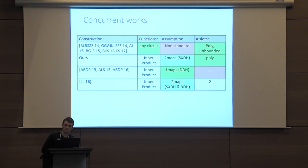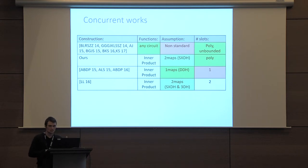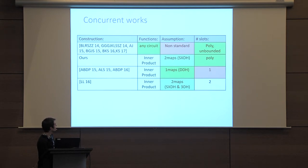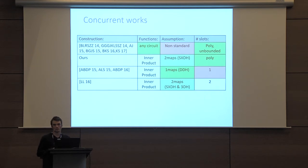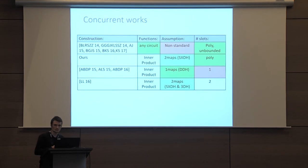It's also interesting to note that even though it's only one degree more, this is still a qualitative gap — we need a stronger assumption to go from a single slot to many slots. This is not the case for large classes of functions, where it has been shown that you can go from single input to multi-input with no extra assumption, only paying a price in security loss. That is a quantitative gap. For us, we need something stronger, but not too much.